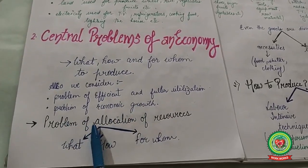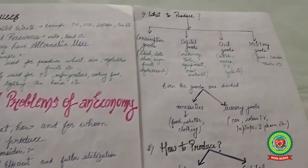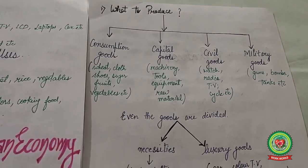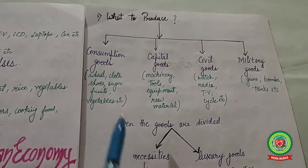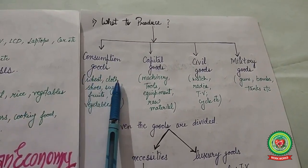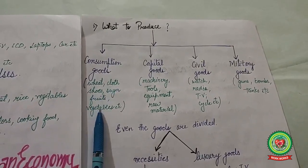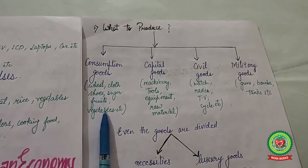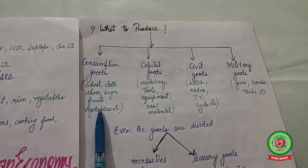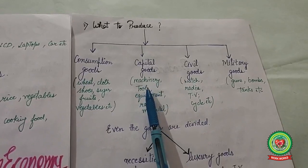The first central problem is allocation of resources. 'What to produce' means deciding among various goods: consumption goods like wheat, clothes, sugar, shoes, fruits, and vegetables — directly consumed by consumers — and capital goods like machinery, tools, equipment, and raw materials, which are produced for further production of goods and services.